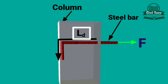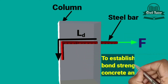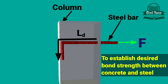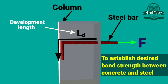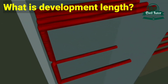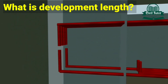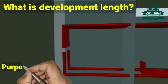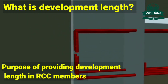The minimum length of steel bar to be provided inside the column to establish desired bond strength between concrete and steel is known as development length. In this tutorial, I am going to discuss about development length and the purpose of providing development length in RCC members.